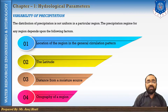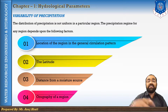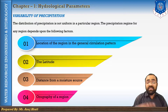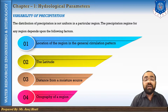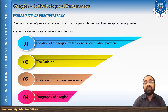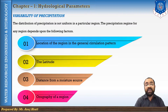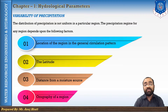This is all about how precipitation is distributed and how it distributes itself concerning different factors: the location of the region in the general circulation pattern, the latitude, the distance from the moisture source, and the orography.